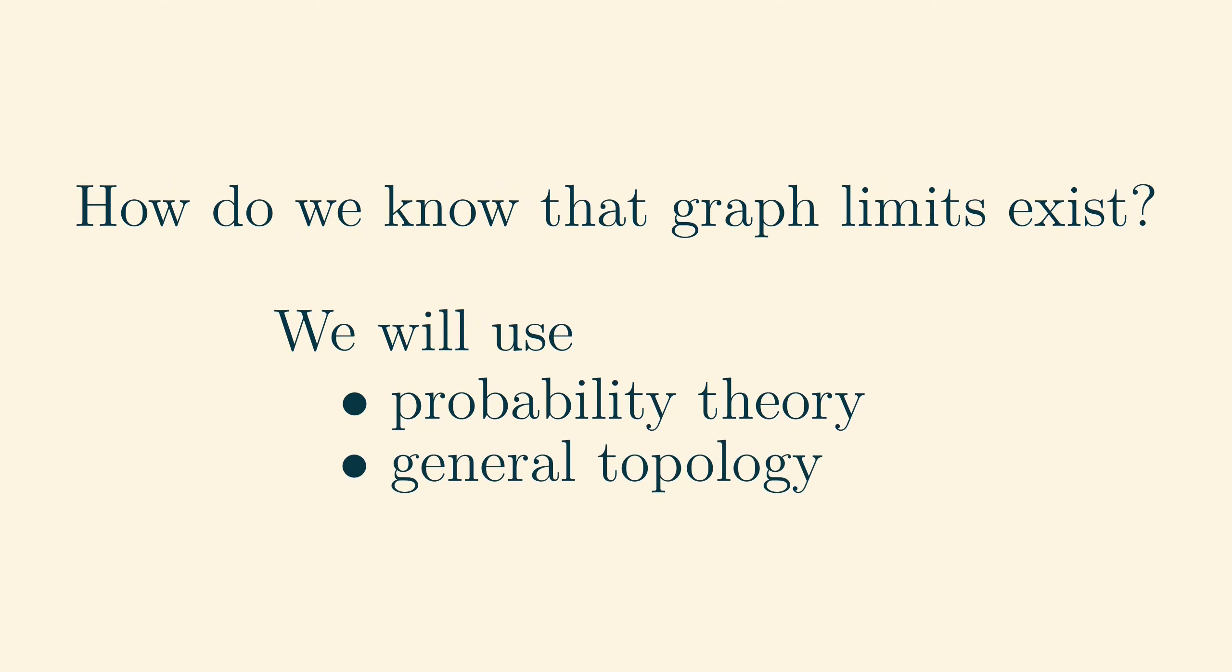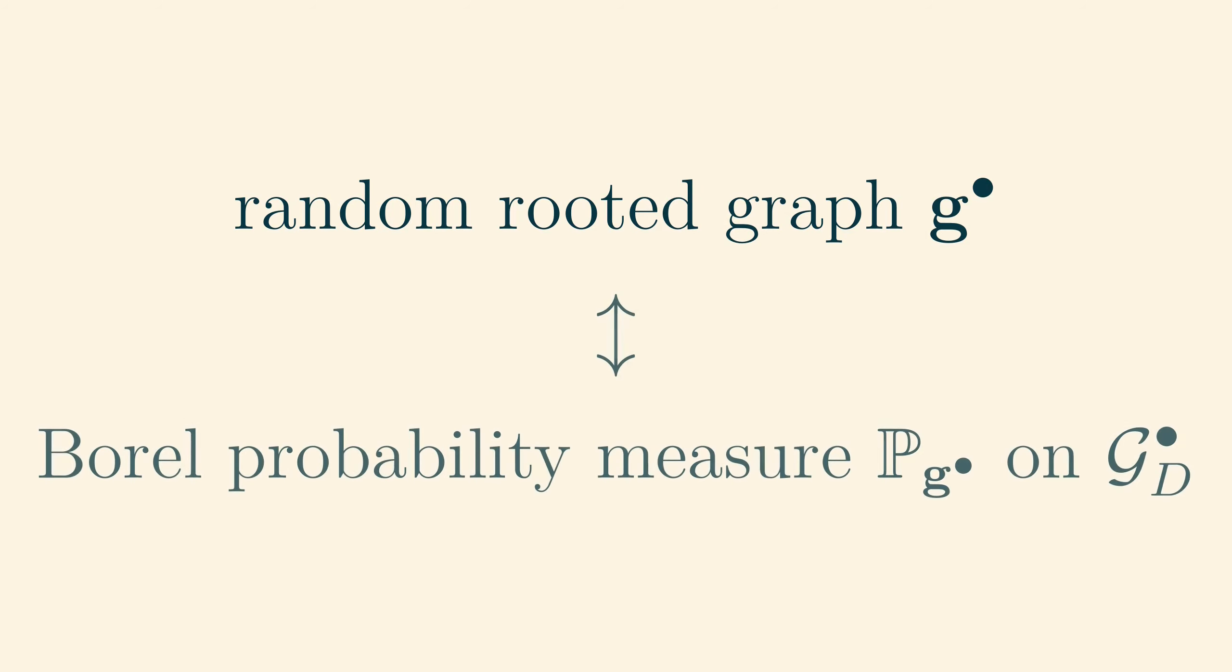For this section, we will also need to assume some familiarity with general topology. Indeed, the local convergence we have described turns the set of random rooted graphs into a compact topological space. First of all, a random rooted graph can be identified with a Borel probability measure on GD dot, namely its probability distribution. With this identification, the local convergence of random rooted graphs we have described is the same thing as weak convergence of probability measures.